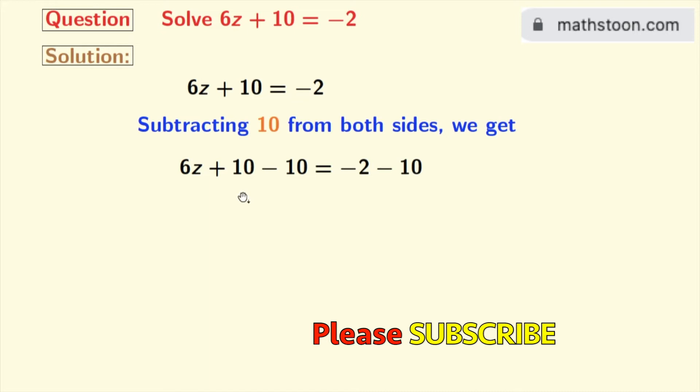Notice that in the left hand side we have plus 10 and minus 10 which is 0. So we are left with 6z. And in the right hand side we have minus 2 minus 10 which is minus 12.